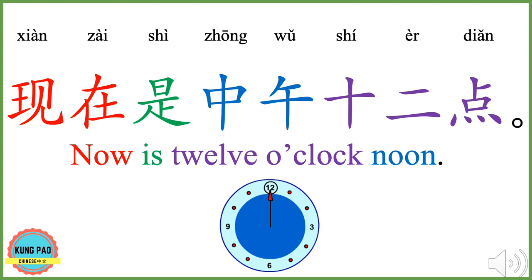现在是中午十二点。 现在 means now. 是 means is. 中午 means noon or midday. 十二点 means twelve o'clock. 十二 means twelve. 点 here means o'clock. 现在是中午十二点 means now is twelve o'clock noon. Now your turn.